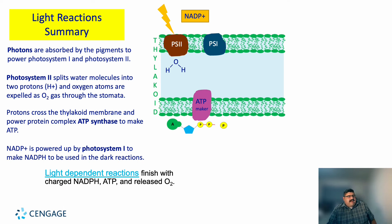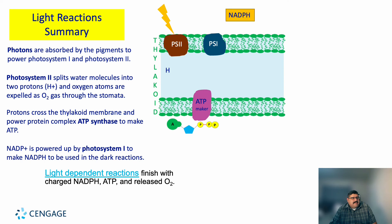A brief overview of the light reaction: photons are absorbed by the pigments to power Photosystem I and II. Photosystem II splits water molecules into two protons and oxygen atoms; oxygen is expelled through the stomata. Protons crowd the thylakoid membrane and power the protein complex ATP synthase to make ATP. NAD+ is powered by Photosystem I to make NADPH, to be used in the dark reactions. The light-dependent reaction finishes with charged NADPH, ATP, and oxygen being released.